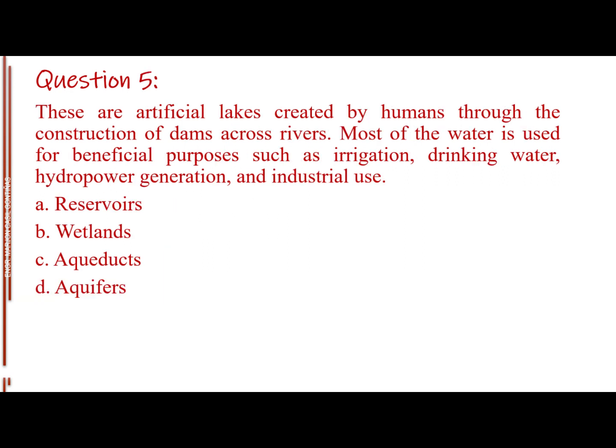Question number 5. These are artificial lakes, created by humans through the construction of dams across rivers. Most of the water is used for beneficial purposes such as irrigation, drinking water, hydropower generation, and industrial use. Letter A, reservoirs. Letter B, wetlands. Letter C, aqueducts. Letter D, aquifers. The answer is Letter A, reservoirs.